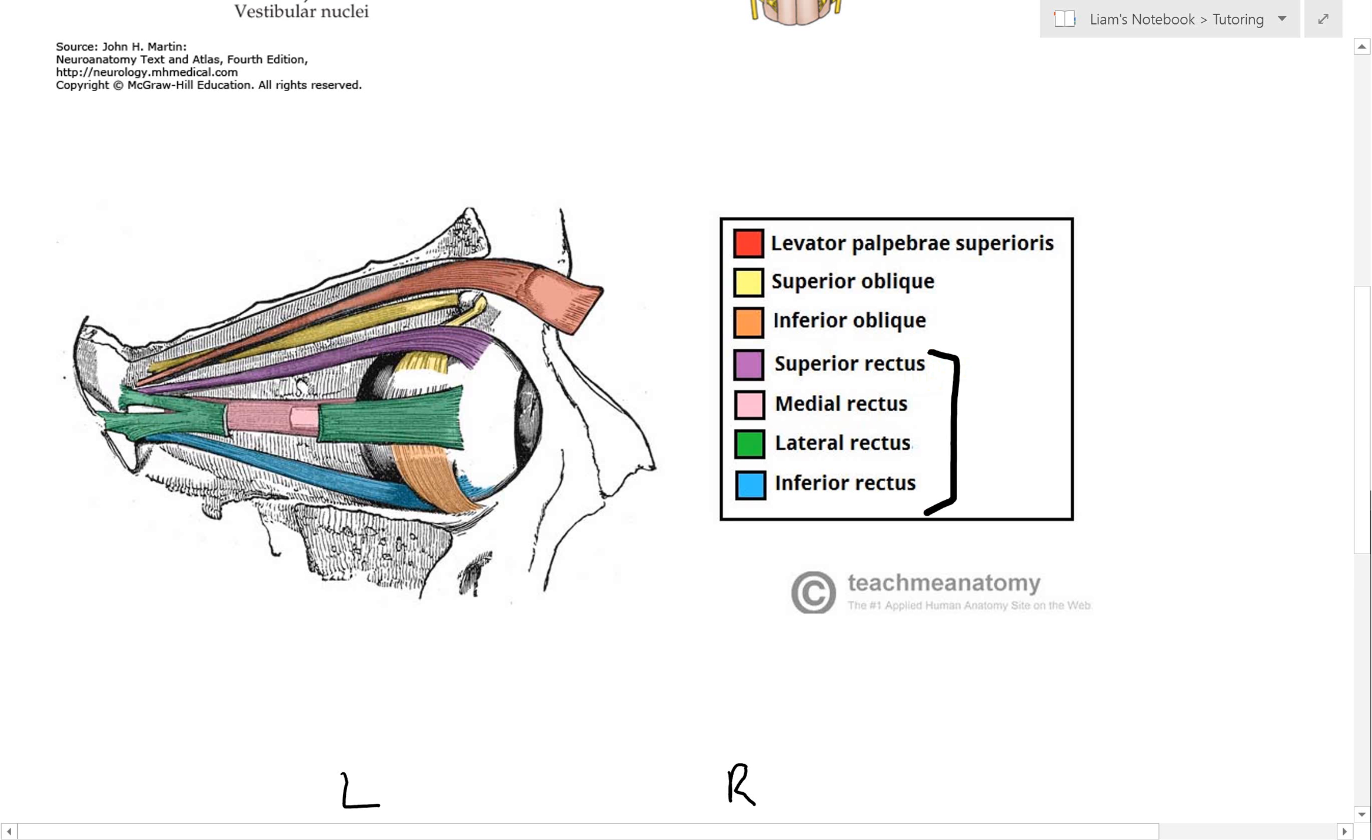For the rectus muscles, their name gives away what they do. Superior rectus attaches on the superior aspect of the globe, so when it contracts it pulls the eyeball up. Medial rectus attaches close to the nose, and when it contracts it pulls the eyeball towards the nose—we call that adduction. Lateral rectus is responsible for the opposite movement, abduction, moving your eyeball away from the midline. Inferior rectus pulls the eyeball down.